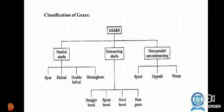Classification of gears: Gears are classified into three major types - parallel shaft gears, intersecting shaft gears, and non-parallel shaft gears. Parallel shaft gears are classified into four types: spur gear, helical gear, double helical gear, and herringbone gear.